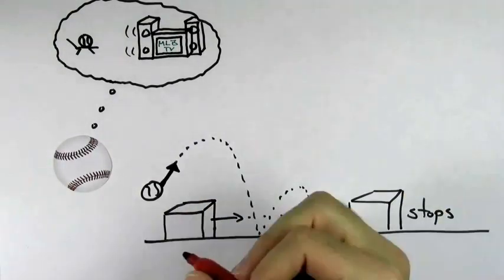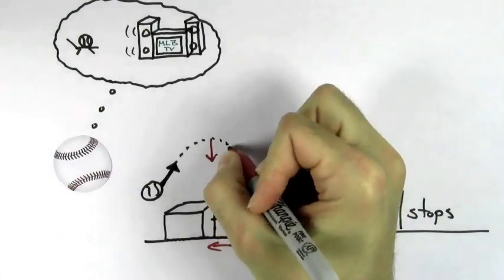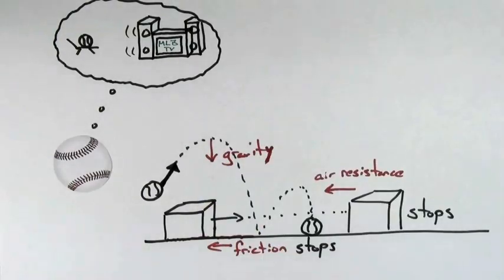But those things are stopping because there's forces on them, like friction, air resistance, and gravity. What if we got rid of all of those forces and then threw a ball? What would happen then?